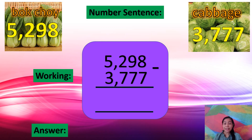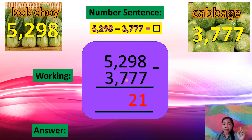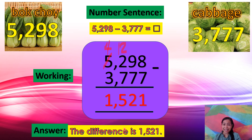So, what is the number sentence? The number sentence is 5,298 minus 3,777. This space here is working — you are going to write and solve for the answer. Let's subtract: 8 minus 7 equals 1; 9 minus 7 equals 2; 2 minus 7 cannot be, so borrow 1 from 5. 5 becomes 4 and 2 becomes 12. 12 minus 7 equals 5. Don't forget to write the comma. 4 minus 3 equals 1. The difference is 1,521.